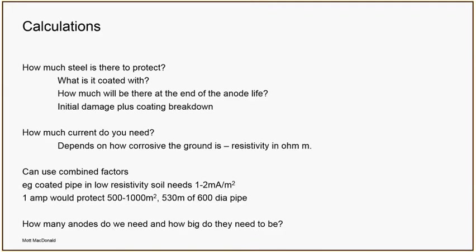We're engineers, so we like hard sums, and for CP it's about how much steel there is to protect. To work that out we need to know what the steel is painted with initially and how much coating will be there at the end of the life of the CP system. We have an initial damage from when you coated the pipe and put it in the ground, and then it's assumed to break down at a percentage per year. How much current you need to stop the steel pipe from rusting depends on how corrosive the ground is — that's where you talk about resistivity, an electrical property of the ground that also indicates how rusty steel gets there.